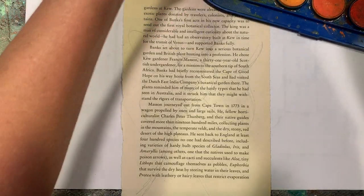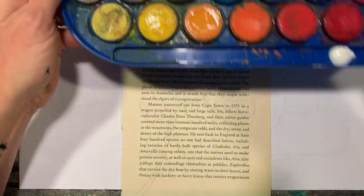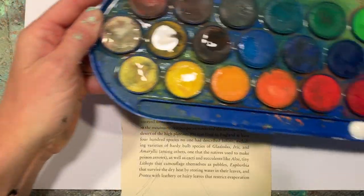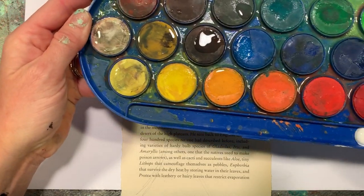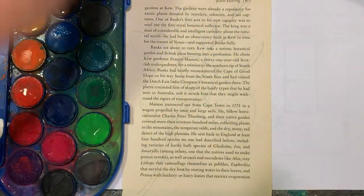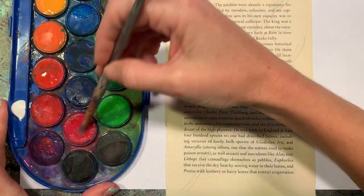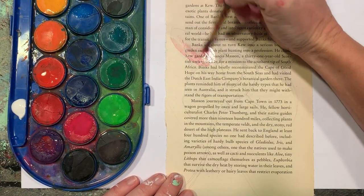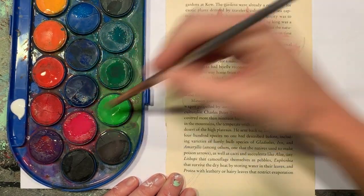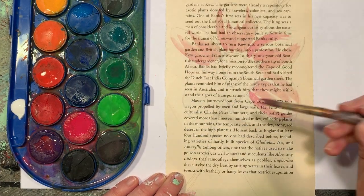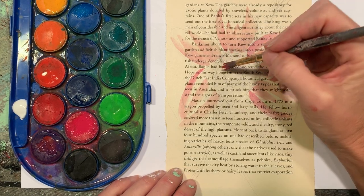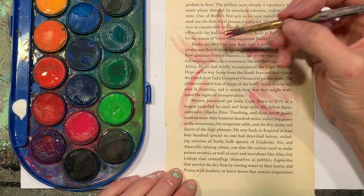Something I do when working with watercolors is, before I use them, I come in and add a little bit of water to each little palette of color because it softens up the color and makes it easier to work with. I'm going to start with a light pink. One thing I do with watercolor is work light to dark, because it's not necessarily a very forgiving medium, and it's easier to do dark values over light values than vice versa.